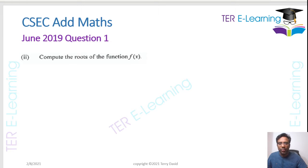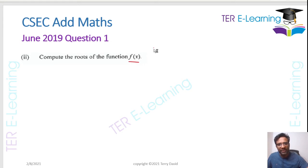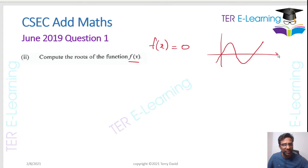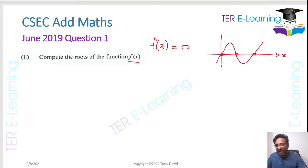In part b, they want us to find the roots of the function. To find the roots, we set the function equal to zero. If you were to plot a polynomial function, the roots are the x-values where the graph crosses the x-axis — that's essentially what they're asking us to find.